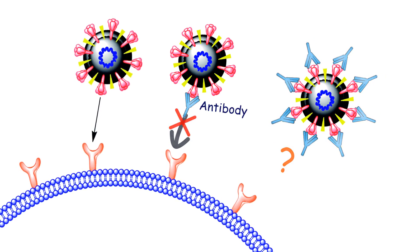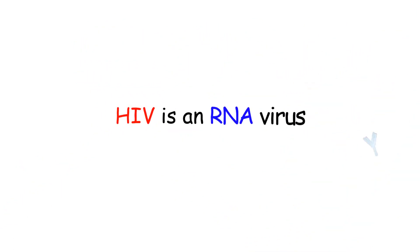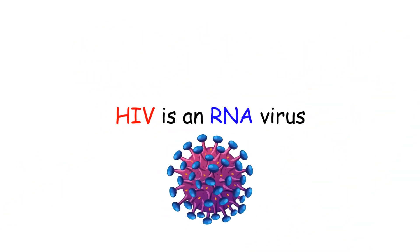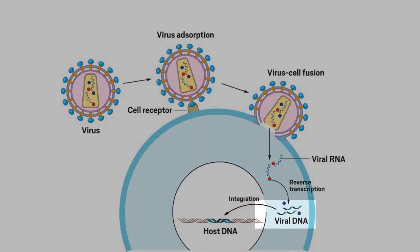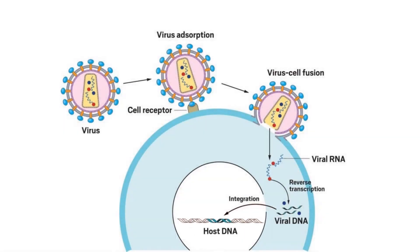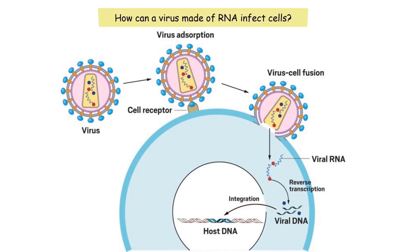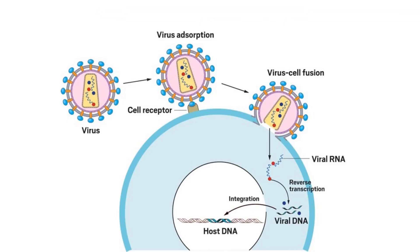First is the fact that HIV is an RNA virus. This directly affects how HIV is able to enter and infect cells. After entering a cell, the DNA from the virus integrates into the DNA of the cell. However, since HIV is made of RNA, the question arises: how can a virus made of RNA infect cells?